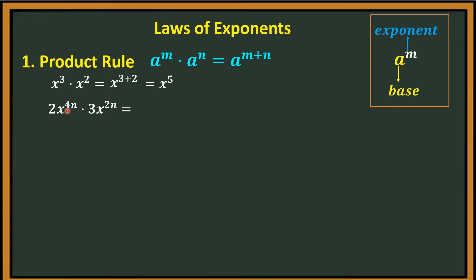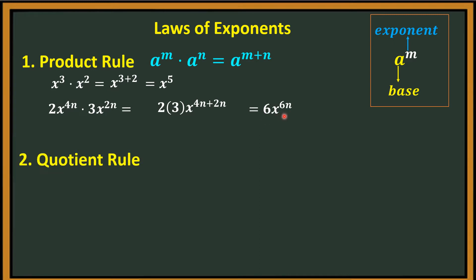Another example: 2x raised to 4n times 3x raised to 2n. Same base which is x. For the coefficients 2 and 3, you multiply them. Then add the exponents — that is 2 times 3 times x raised to 4n plus 2n. So that is 6x raised to 6n.